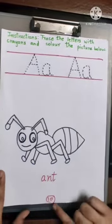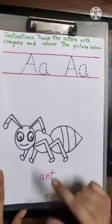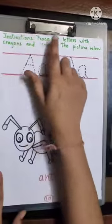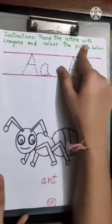Today we are going to solve page number 10 of Alphabet Workbook. Instructions: Trace the letters with crayons and color the picture below.